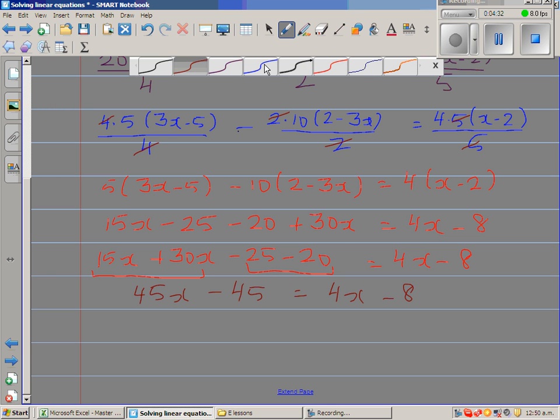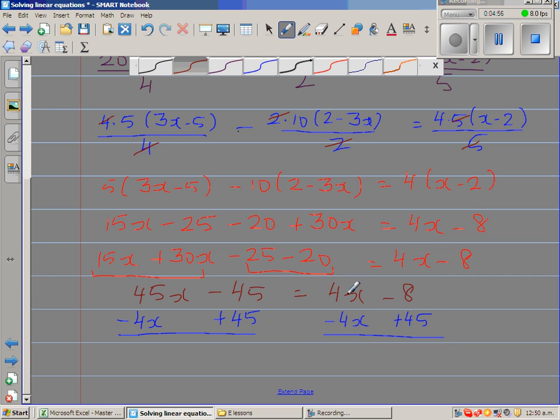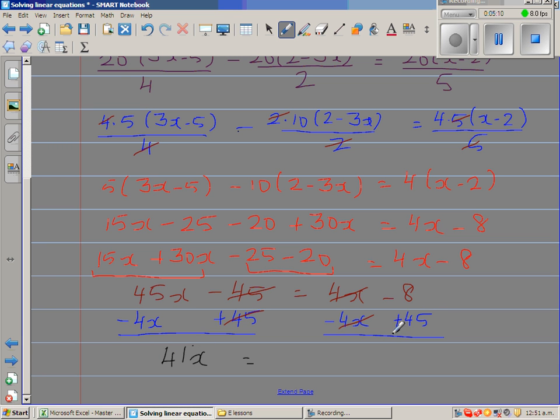I want to bring the x's on the left hand side and the numbers on the right hand side. So I want to get rid of this 4x. So I am going to take away 4x from this side. Now I want to get rid of this negative 45 from this side. So I am adding 45 to this side. So these are two sides of an equation. So what happens now? Plus 45 minus 45 gets cancelled. So now this is 45x take away 4x. This is 41x is equal to plus 45 minus 8 is 37.